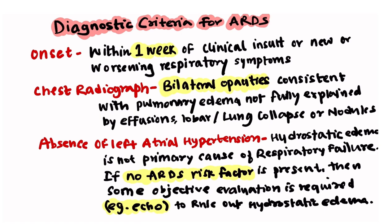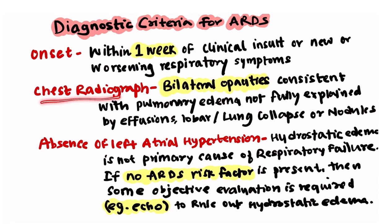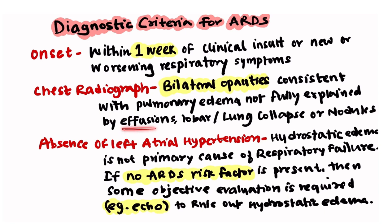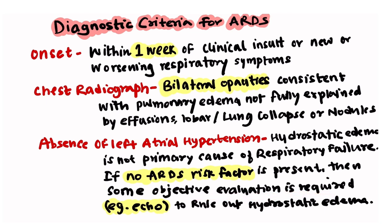ARDS is diagnosed using the Berlin criteria. First, onset must be within one week of a clinical insult or new or worsening respiratory symptoms. Second, chest radiograph should show bilateral opacities consistent with pulmonary edema not fully explained by effusion, lobar or lung collapse, or nodules. Third, there should be absence of left atrial hypertension as the primary cause of respiratory failure — echocardiography should be performed to rule out hydrostatic edema if no ARDS risk factor is present.